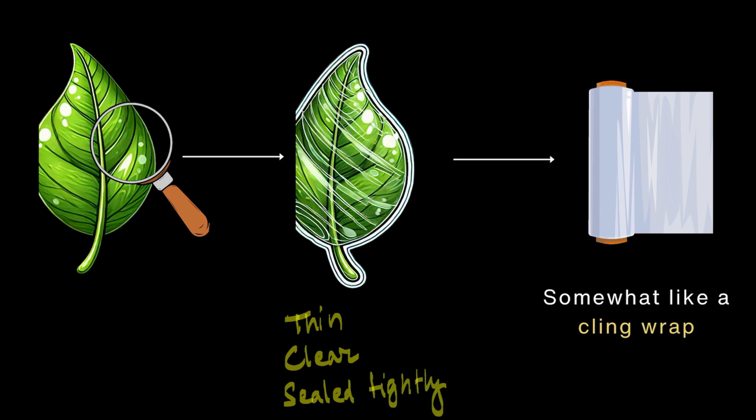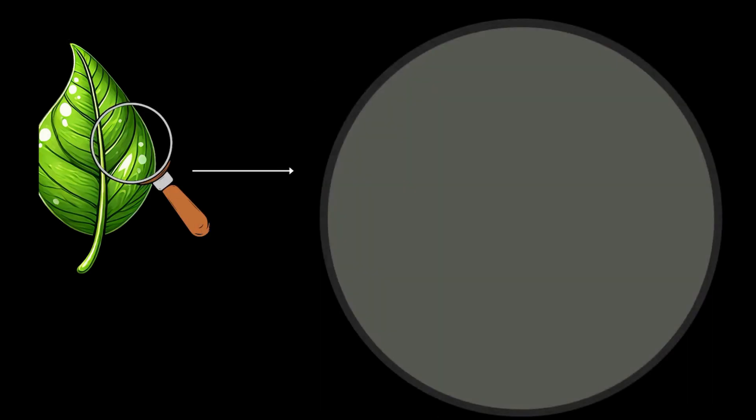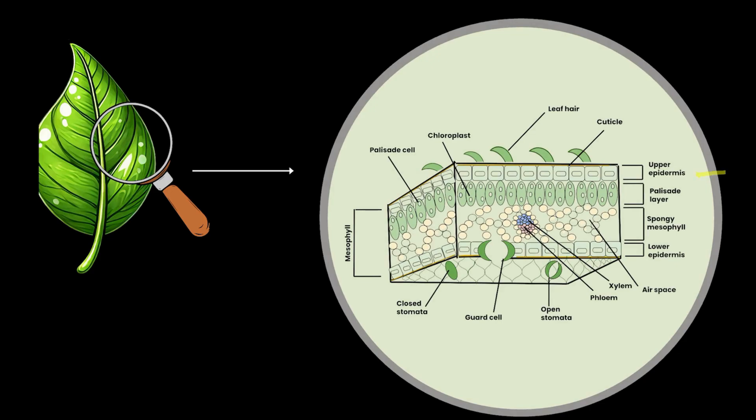Let's take each of these characteristics one by one and to do that let's zoom into a leaf. On doing that we see these multiple layers of cells. But for this video we will just focus on the top most and the bottom most layer, that is the upper epidermis and the lower epidermis.